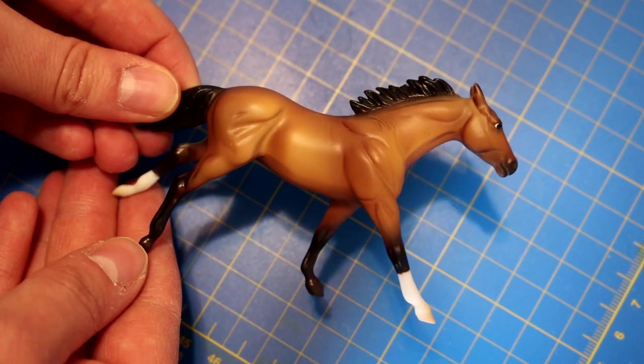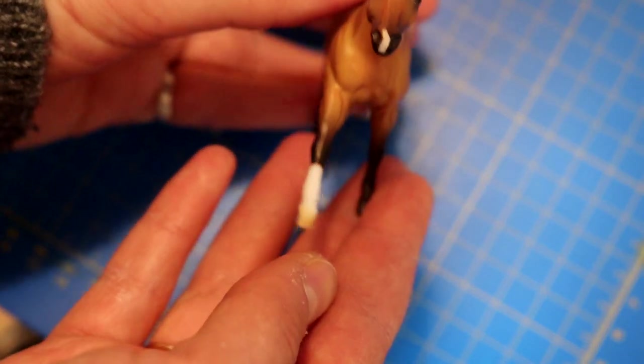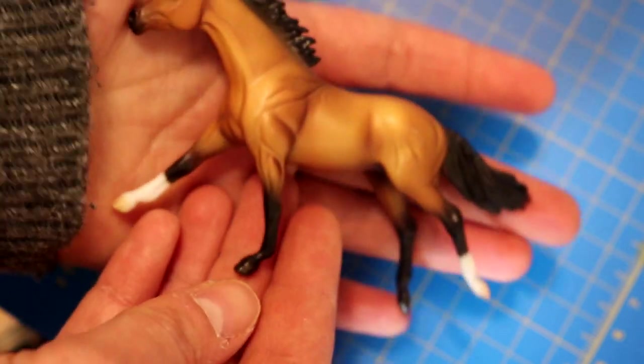Generation 2 stablemates have a little more detail in the body and the face but generally the legs are still quite thin and the heads are small. These guys are also quite accurate in terms of proportions.